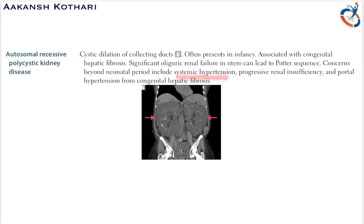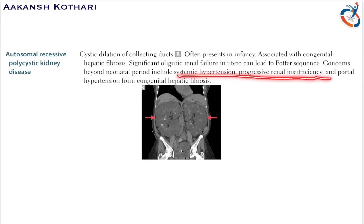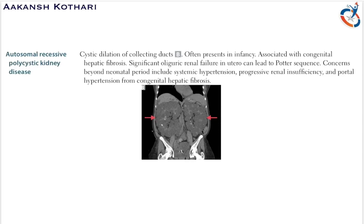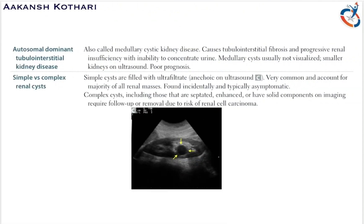Concerns beyond the neonatal period include systemic hypertension, progressive renal failure, and portal hypertension due to hepatic fibrosis. Increased renin levels lead to systemic hypertension, which stems from the congenital hepatic fibrosis.